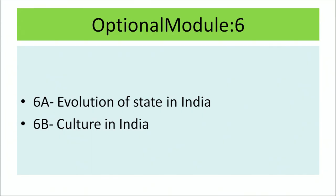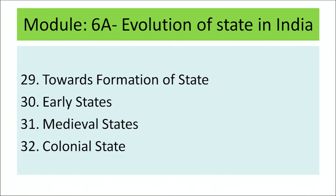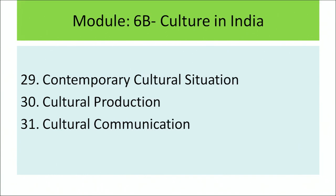The last module has 2 optional modules: Module 6A Evolution of State in India, and Module 6B Culture in India. These optional modules are designed to give the learner flexibility and freedom to choose a topic of his or her choice, and to give a deeper understanding into specific areas of history and culture. In Module 6A the lessons are: Lesson 29 Towards Formation of State, Lesson 30 Early States, Lesson 31 Medieval States, and Lesson 32 Colonial States. In Module 6B the lessons are: Lesson 29 Contemporary Culture Situation, Lesson 30 Cultural Production, and Lesson 31 Cultural Communication.